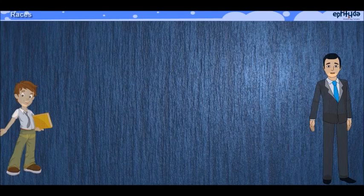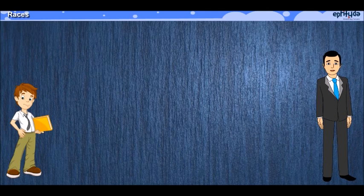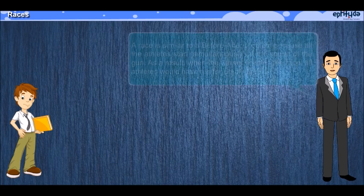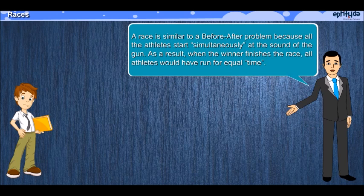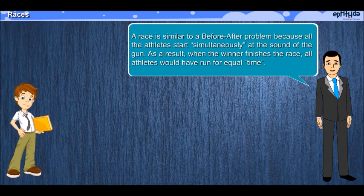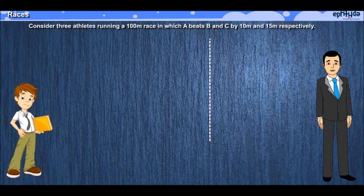Hi everybody. In this video we are going to discuss the second problem type in time, speed and distance called races. A race problem is very similar to a before-after problem, because after all athletes who participate in a race start simultaneously. Which means they run for equal amount of time. Let's understand this better by way of an example.